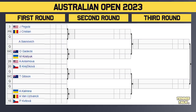Next section: the 3rd seed Pagula takes on Christian in the first round, with a potential third-round matchup against Anisimova, the 28th seed. Krujikova, the 20th seed, takes on a qualifier. Then Kvitova, the 15th seed, could meet Krujikova in the third round and Pagula in the fourth round. Notably, Kvitova did beat Pagula in the United Cup earlier, so that's a tough matchup.